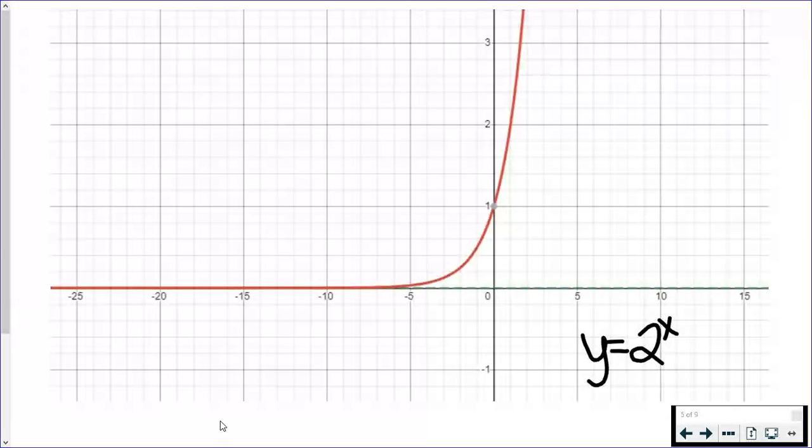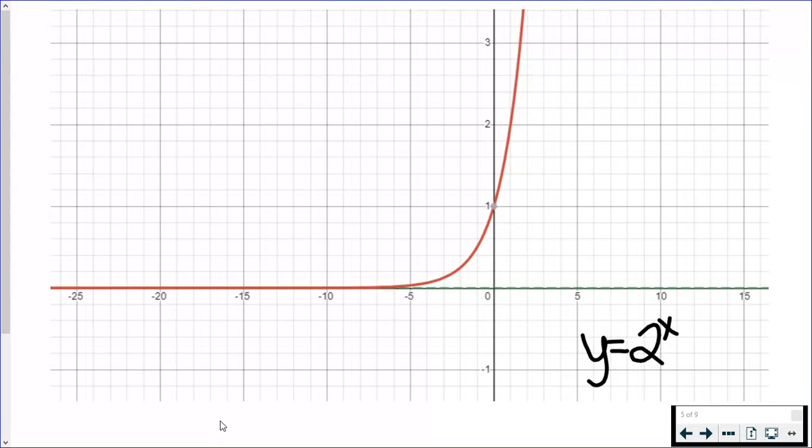That is what we call the asymptote right there. The x-axis, or the line y equals 0, is our asymptote in this situation.